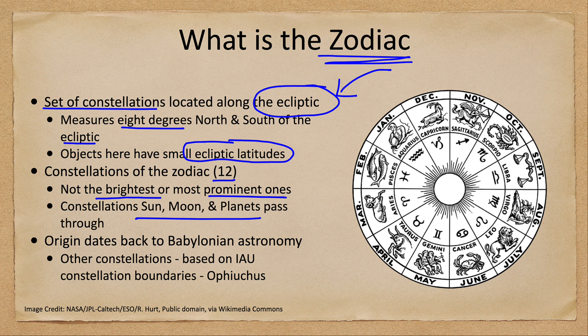They pass through these constellations because they are orbiting. The Earth, the Moon, and the planets are all moving, so they will appear to move through these different constellations over the course of a year. The very early origins of the zodiac date back to Babylonian astronomy, which gave us many of these early constellations.